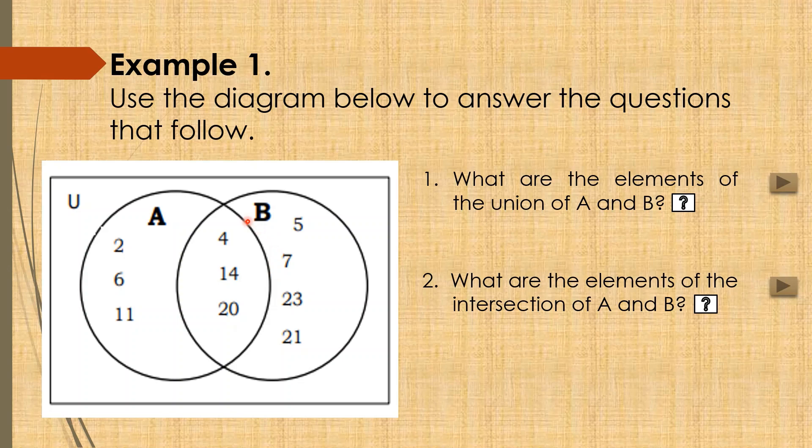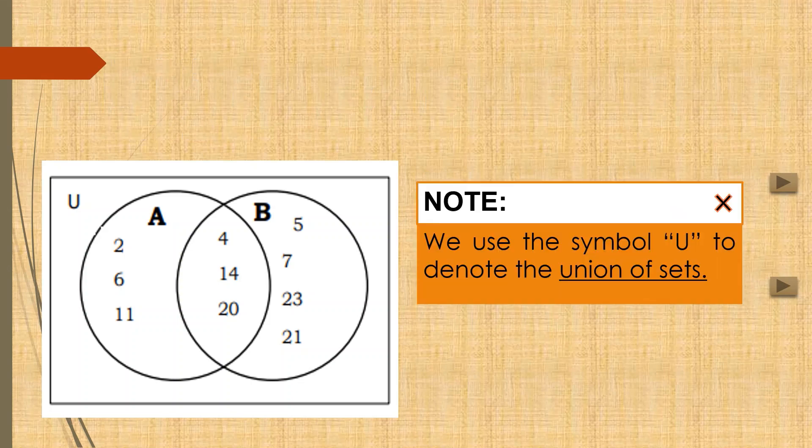Let us now answer number 1. What are the elements of the union of A and B? Therefore, we just have to combine all the elements. But before that, let us have this reminder. We use the symbol U to denote the union of sets. Again, capital letter U represents the word union.